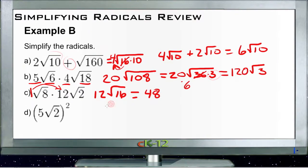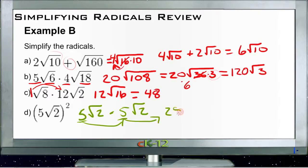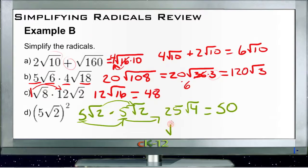And then finally for our last example here, D: we have 5 square roots of 2 squared. So that's 5 square roots of 2 times 5 square roots of 2. So we have 5 times 5, that's 25. And then we have the square root of 2 times the square root of 2, which is the square root of 4. The square root of 4 is 2, so we get a total of 50 — 2 times 25. The other way to look at it: square root of 2 times square root of 2 is also the square root of 2 squared, so the square and the square root cancel each other, leaving us with just 2. In either case, we end up with 25 times 2, or 50.